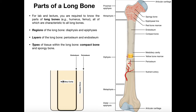Inside the medullary cavity of adult long bones, we actually have yellow bone marrow — it runs the entire length of the medullary cavity of the diaphysis. So again, the medullary cavity, which is the hollow part of the diaphysis, is not empty — it contains things like yellow bone marrow.